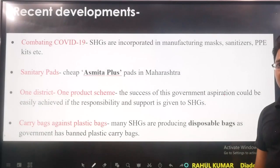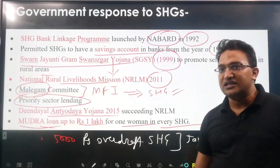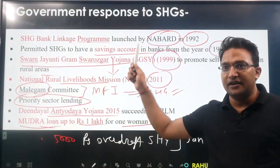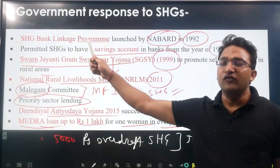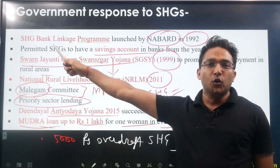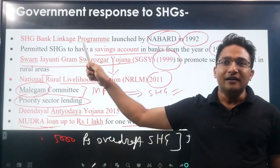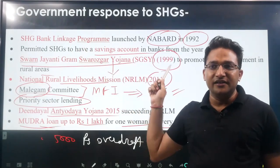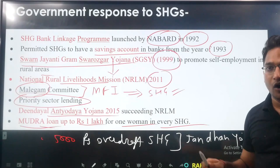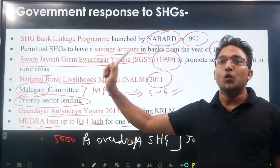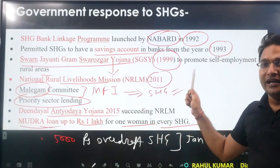Government initiatives started from 1992 primarily in the form of the Self-Help Group Bank Linkage Program. Then in 1993 the government allowed opening of saving accounts. In 1999, the Swarnajayanti Gram Swarozgar Yojana was introduced.